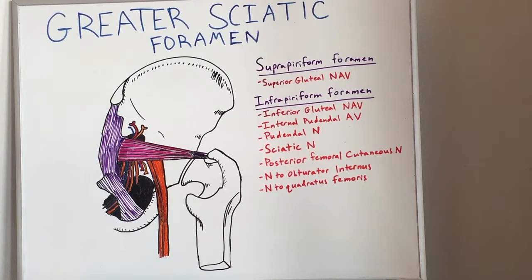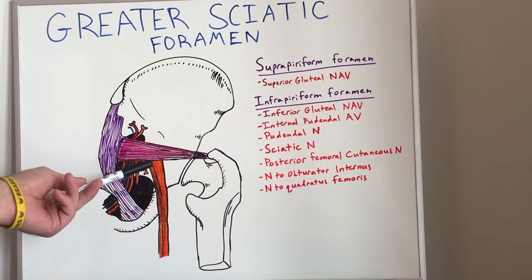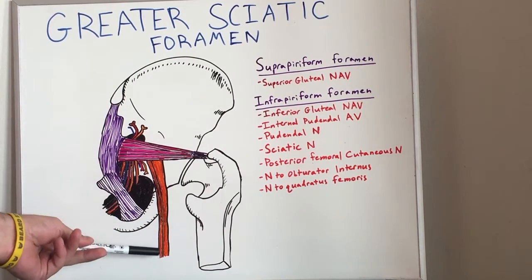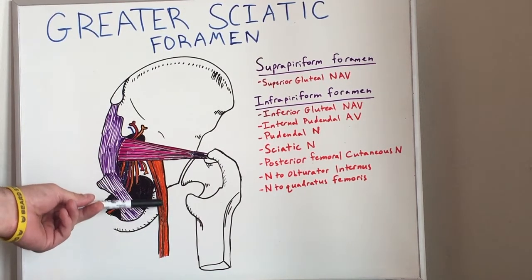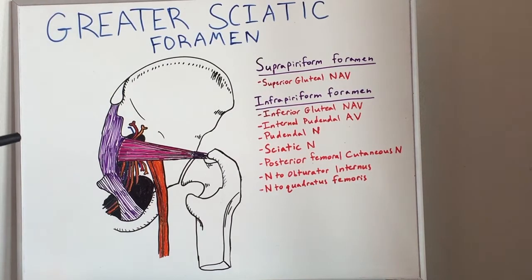We also have here the sciatic nerve, this thick band, which is the thickest nerve in our body, and that supplies the posterior lower appendage.